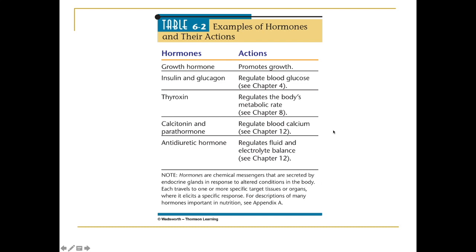Here are some examples of hormones: growth hormone promotes growth; insulin and glucagon are complementary hormones that regulate blood glucose; thyroxin is a thyroid hormone important in regulating your metabolic rate; calcitonin and parathormone help regulate blood calcium; and anti-diuretic hormone helps regulate fluid and electrolyte balance. Hormones are chemical messengers secreted by endocrine glands in response to altered conditions of the body, and they travel to target tissues or organs and elicit specific responses. A good OER textbook on nutrition from the University of Hawaii covers every topic in this class and more.